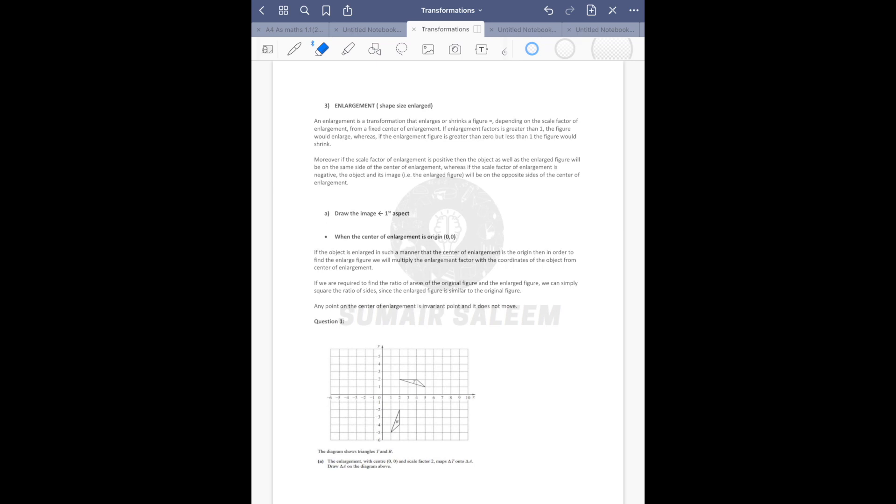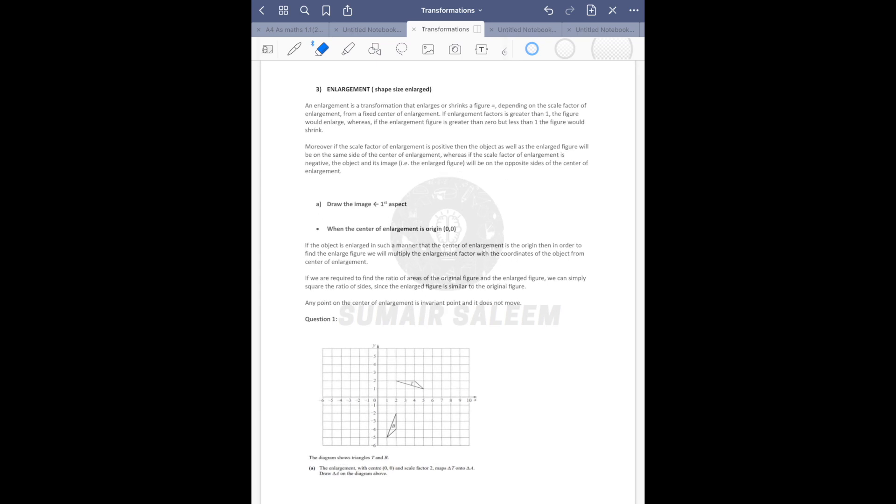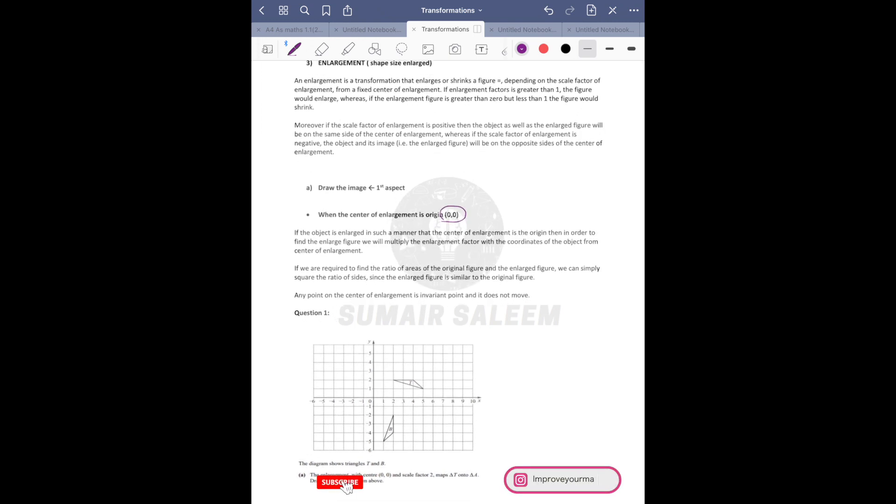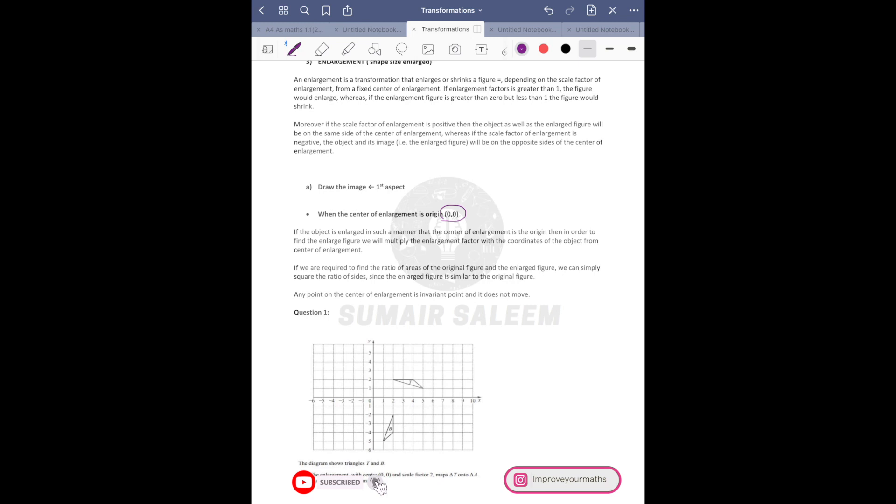Okay guys, now comes enlargement. If the center is 0,0 your life is really easy. The diagram shows T and B, you need to map T onto A. Center is 0,0 and scale factor is 2, so what you are supposed to do...